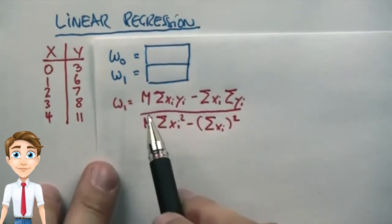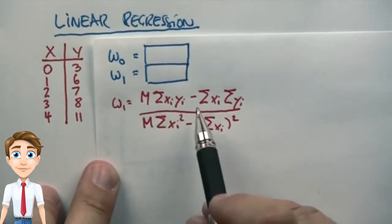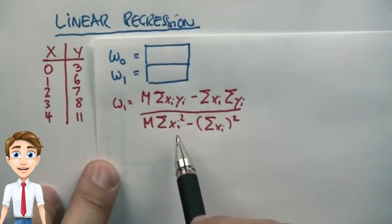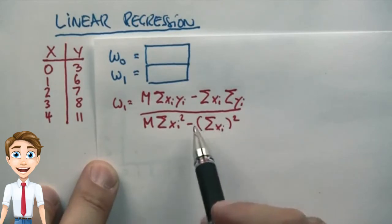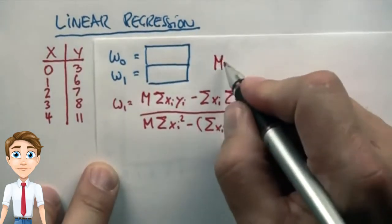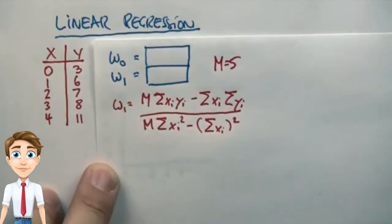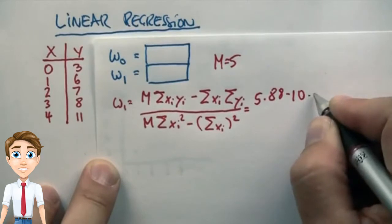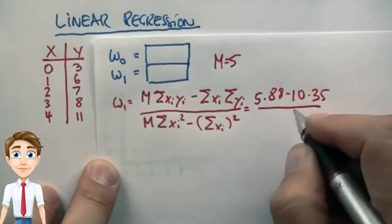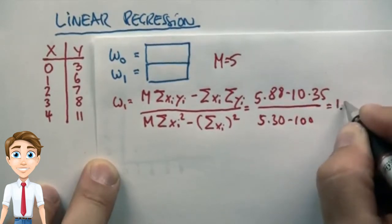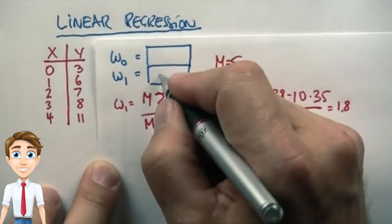w1 is obtained by m times sum of xy minus sum of x times sum of y over m times sum xi squared minus sum of xi in brackets squared. And if you plug in these numbers over here for m equals 5 because there's 5 training examples, we get 5 times 88 minus 10 times 35 over 5 times 30 minus 100 which is 1.8. That is the correct answer for w1.